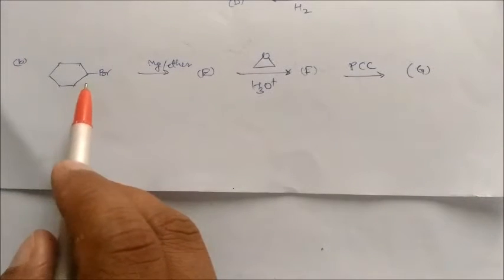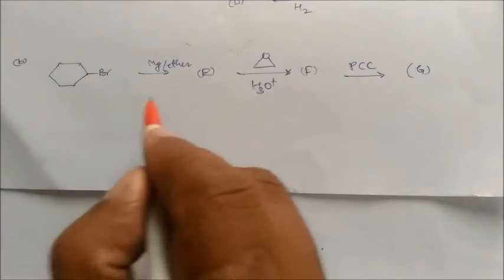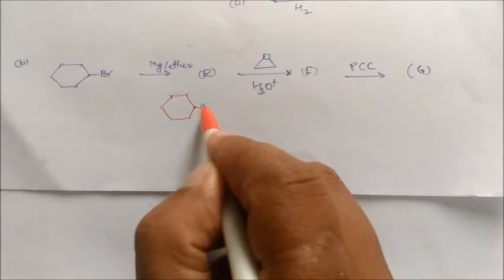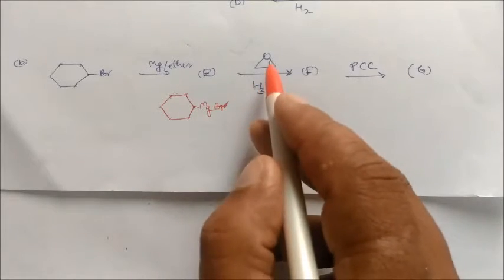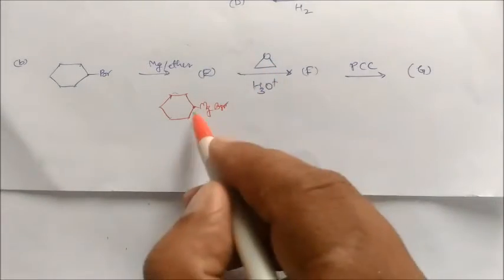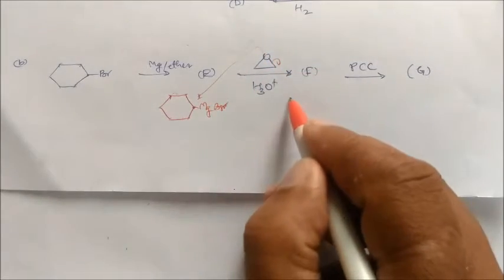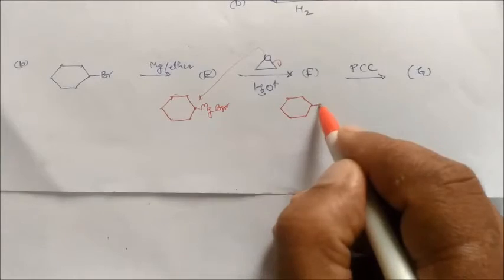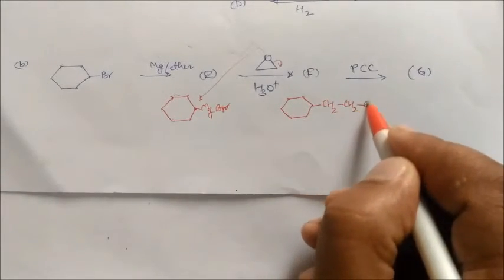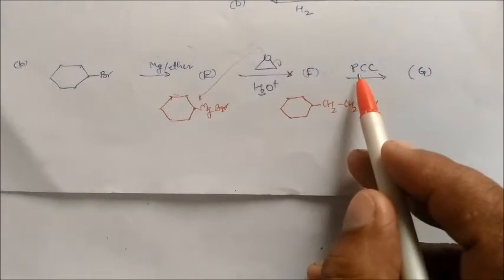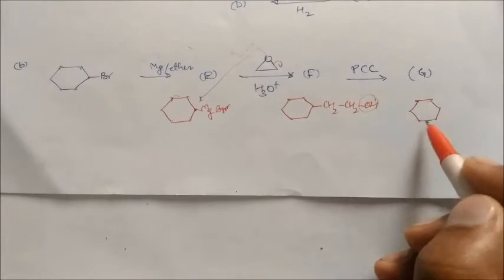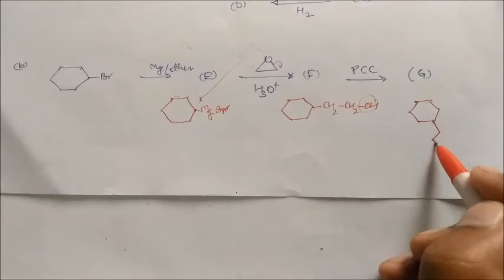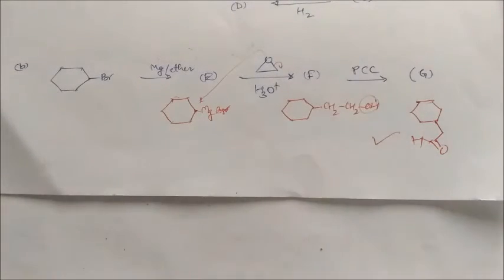A cycloalkyl compound reacts with Mg ether to give a Grignard reagent with MgBr. This reacts with an epoxide — the epoxide ring opens and the Grignard attacks, giving compound F with CS2 and CS2OH (an alcohol). Using PCC, this alcohol converts to an aldehyde, giving the product with an oxygen on the terminal carbon (compound G, the aldehyde product). These are the complete reaction sequences.